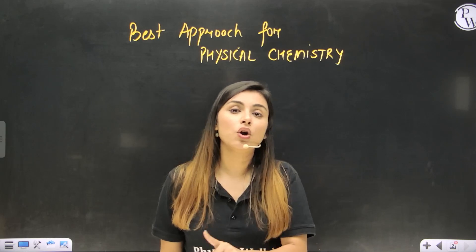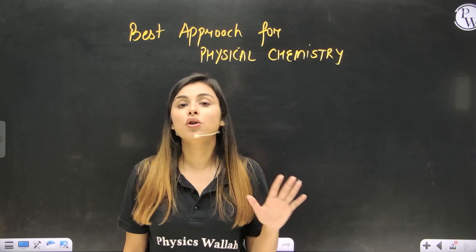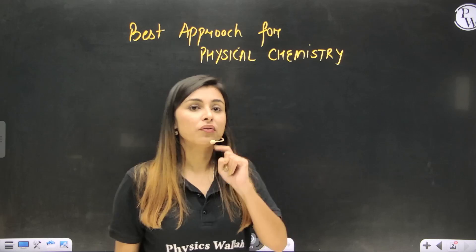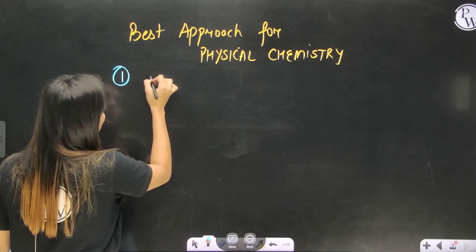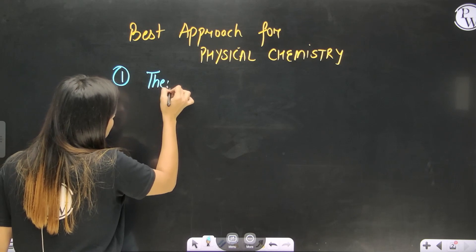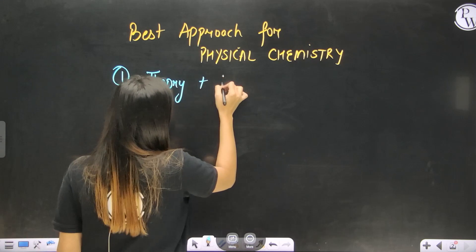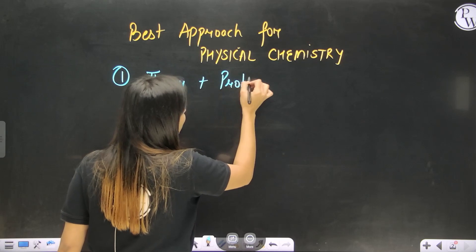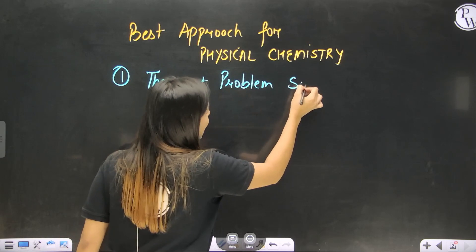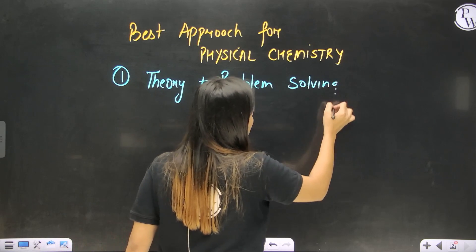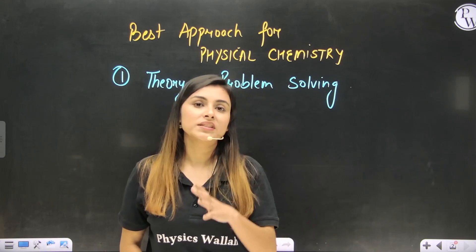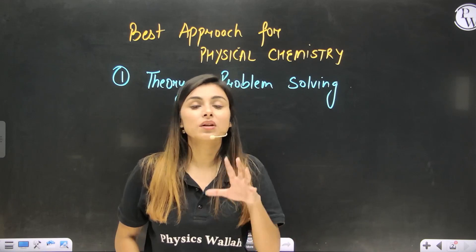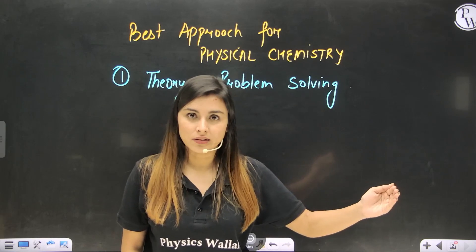If you are not clear with the theory, you cannot excel in physical chemistry. So your first and most important approach should be to focus on theory and then problem solving. What I mean by this is that once you study a topic, you have to go through its theory so that you'll be clear with the concept, and then solve the numericals.